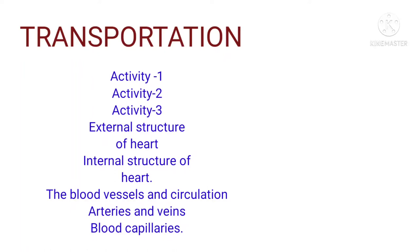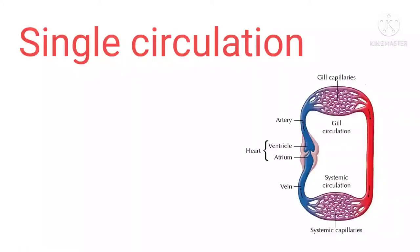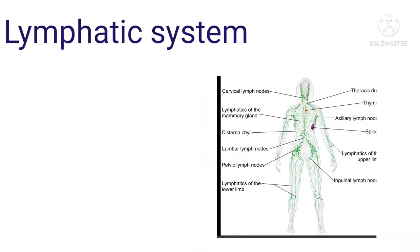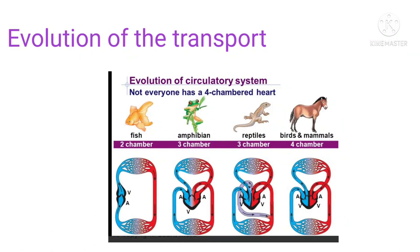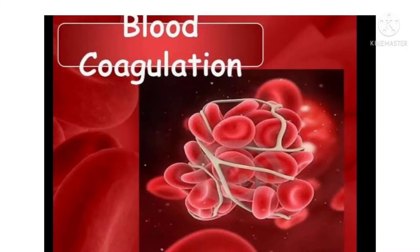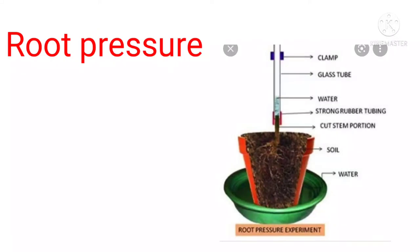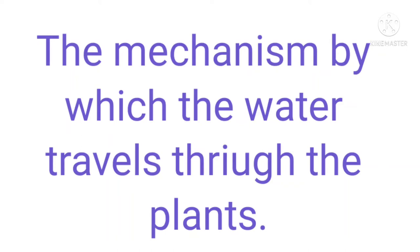In the last topic we discussed arteries, veins, and blood capillaries. Now we are going to the cardiac cycle, single circulation and double circulation, lymphatic system, evolution of the transport system, blood pressure, coagulation of blood, how minerals transport within the plant, root pressure, transport of mineral salts, and transport of manufactured food.